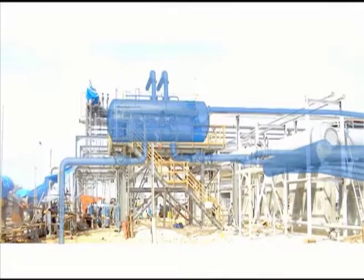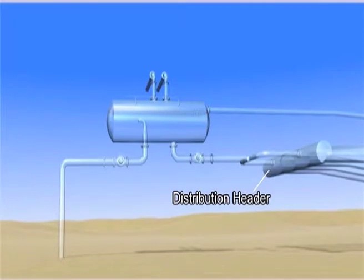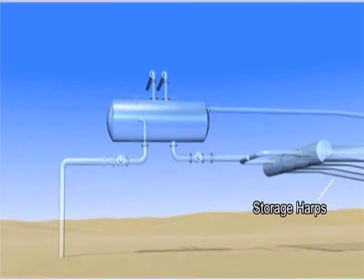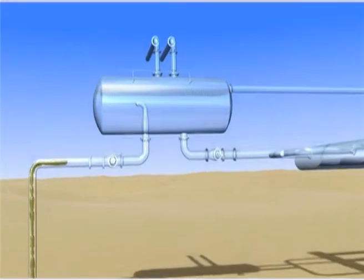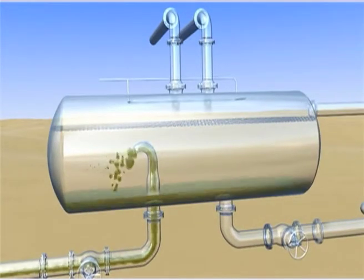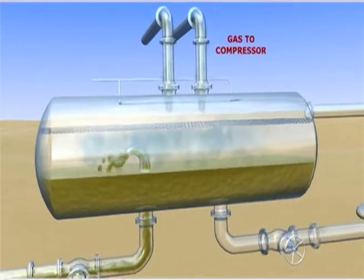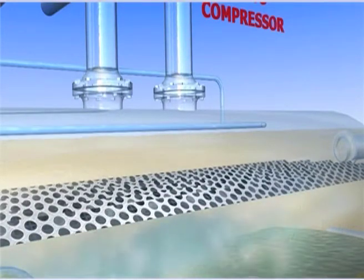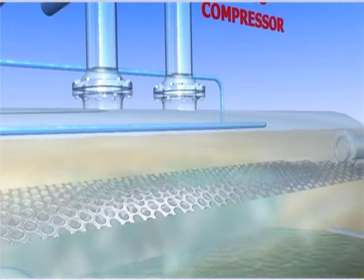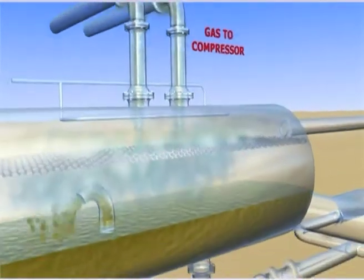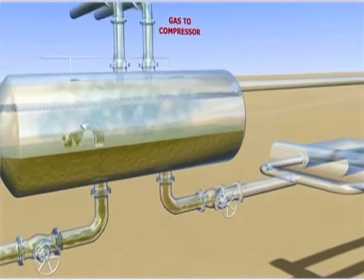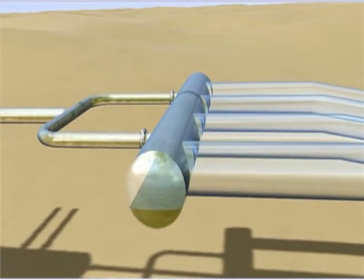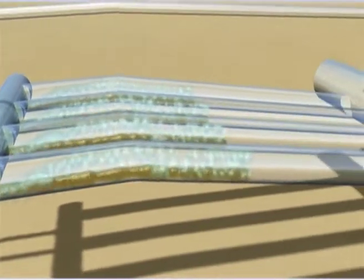The separator slug catcher consists of distribution headers, separation chambers, dry gas risers, storage harps, liquids and sludge manifolds. The two-phase flow of gas and liquids in the pipelines operates as slug flow regime. Due to gravity, liquids will tend to settle on the bottom while the gases occupy the top section of the pipeline. The slug catcher is a vessel with sufficient buffer volume to store the largest slugs expected from the upstream system. It is located at the entrance of the processing facility. The buffered liquids can be drained to the processing equipment at a much slower rate to prevent overloading the system. As slugs are a periodical phenomenon, the slug catcher should be emptied before the next slug arrives.